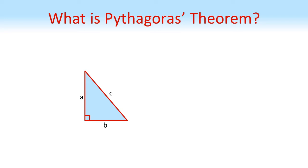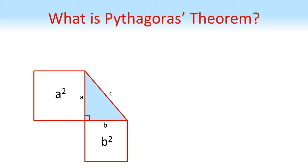Here we've got a right-angled triangle with the hypotenuse, the longest side of length C, and the two shorter sides of length A and B. We're going to draw squares on the two shorter sides. So on the left we've got a square of A by A, hence an area of A squared, and on the bottom a square of B by B, hence an area of B squared.